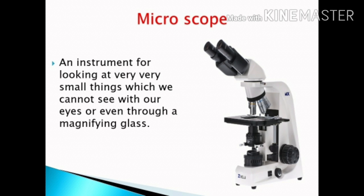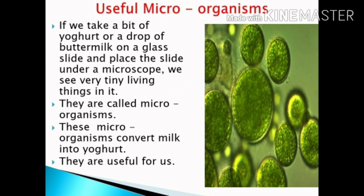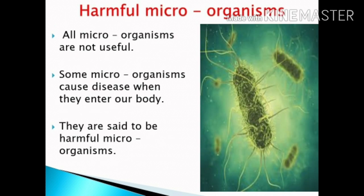If we take a bit of yogurt or a drop of buttermilk on a glass slide and place the slide under a microscope, we see very tiny living things — these are called microorganisms. These microorganisms convert milk into yogurt, so they are useful for us.